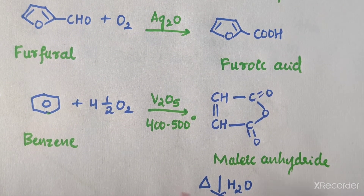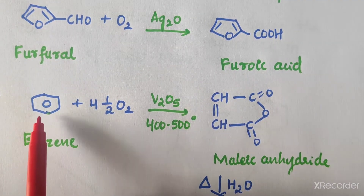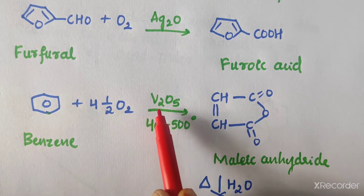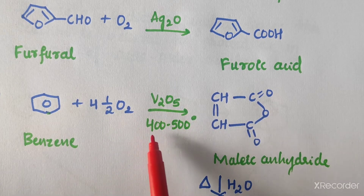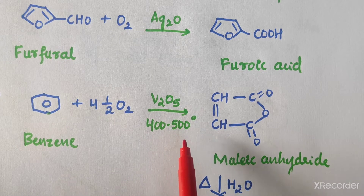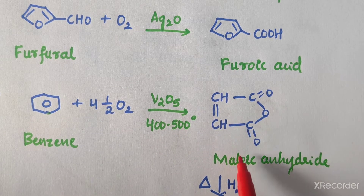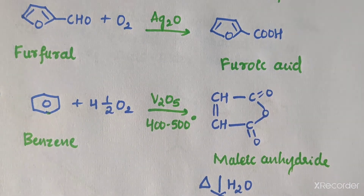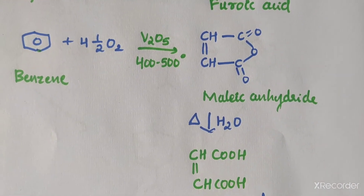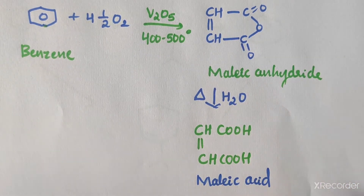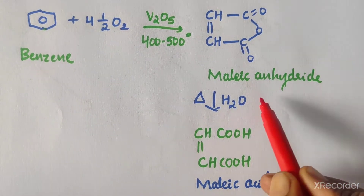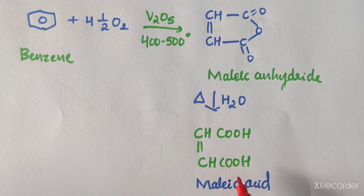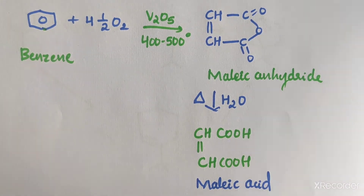Maleic acid can be synthesized using benzene as a starting material. Benzene on oxidation in the presence of vanadium pentoxide at 400 to 500 degrees centigrade gives the intermediate maleic anhydride, which on further heating with water gives maleic acid. So the intermediate step is maleic anhydride, which on heating with water gives maleic acid.